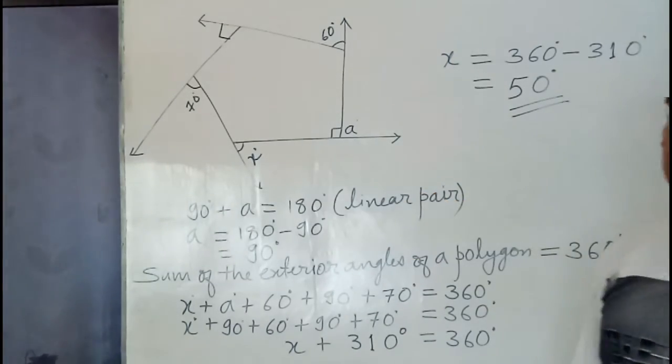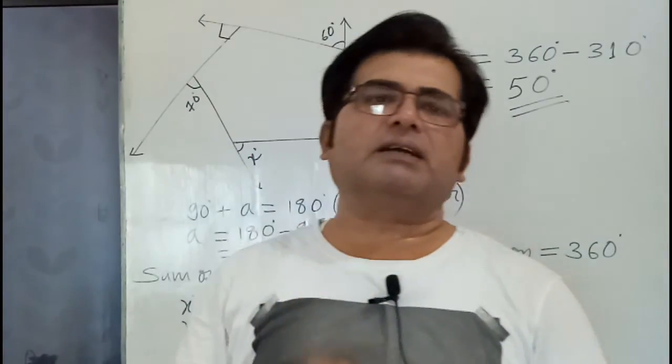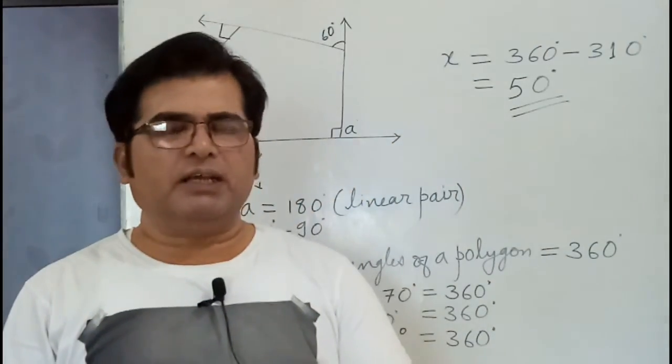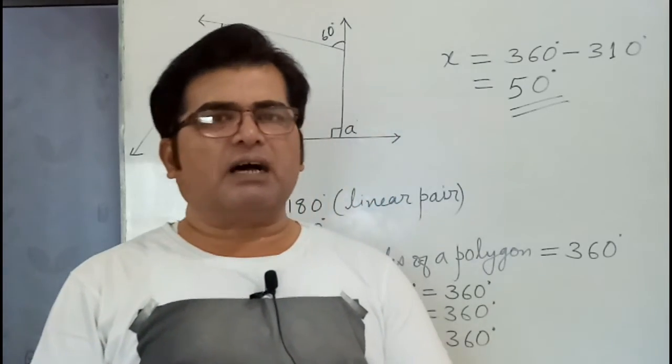So the value of X is 50 degrees. This is the method when we have to find any one exterior angle of a given polygon when the rest of the values of exterior angles are given.